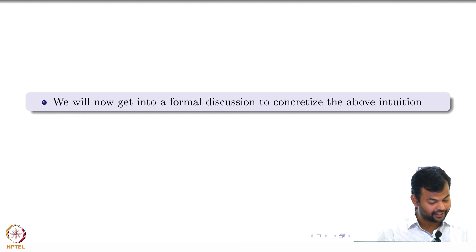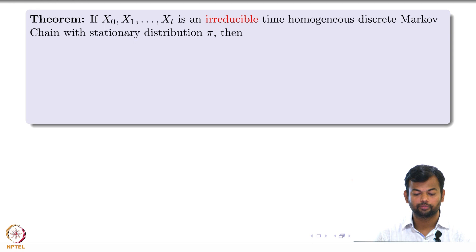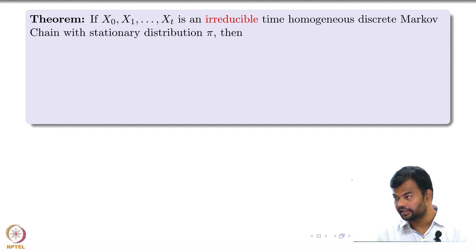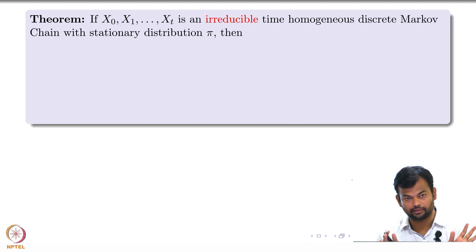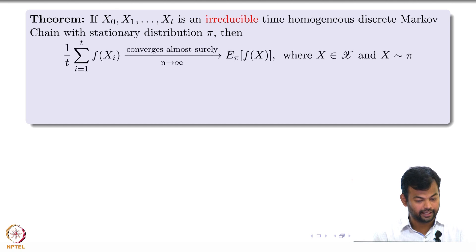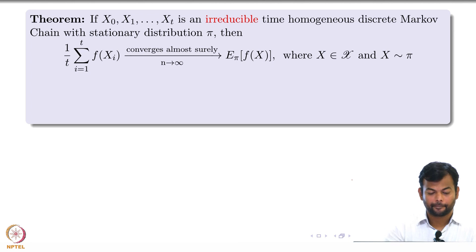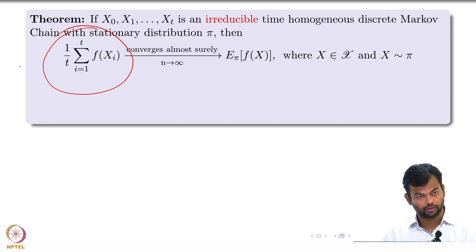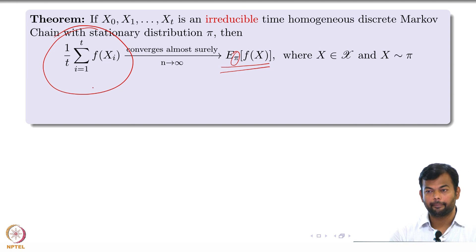Now we will get into a more formal discussion — I will bring in some theorems. If X0, X1, up to XT is an irreducible, time-homogeneous, discrete-time and discrete-space Markov chain with stationary distribution pi, then this theorem tells us that if I take samples from this chain, the empirical estimate of the expectation of a function f of X under the stationary distribution pi will almost surely converge to the true expectation — remember, this is asymptotically, as N tends to infinity.